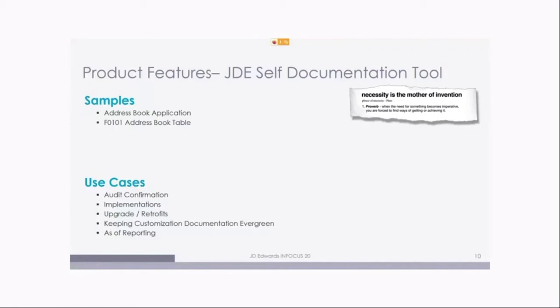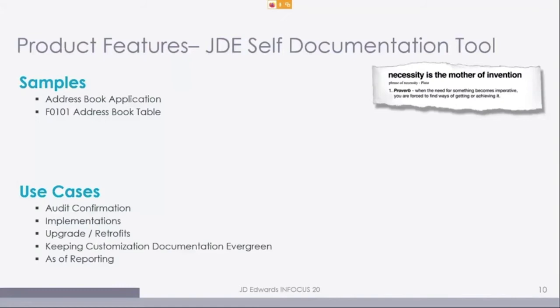Our use cases are pretty clear: audit confirmation; implementations when you're done — everyone knows after go-live there have been a lot of changes that got rushed and didn't get documented. Run this right after go-live and you've got current up-to-date technical documentation. Upgrades and retrofits — before you run an upgrade or retrofit, bring up the current documentation, run it out, and use it for retrofitting code back into the system. And as-of reporting — what is the state of my system right now? What is our as-of state? Let's take a look at it.